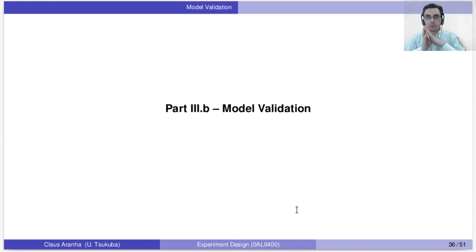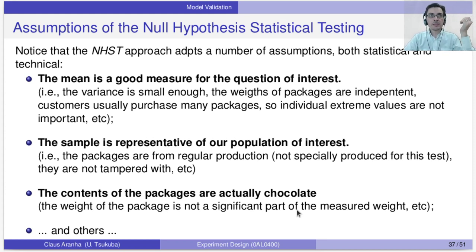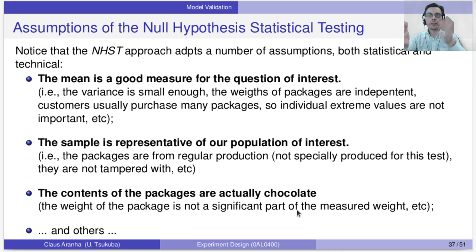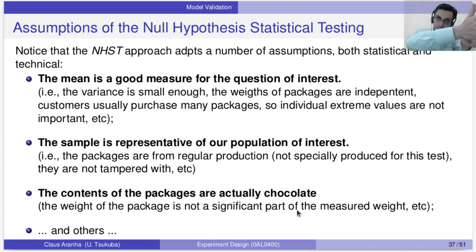Now let's talk about model validation — another important aspect of using tests responsibly. The null hypothesis statistical test adopts a number of assumptions, some statistical and some technical. Statistical assumptions include: the mean is a good measure for the question of interest (which assumes the variance is small enough), and the weights of packages are independent. If the weight of the second package depends on the first — for example, each successive one gets bigger — then the mean doesn't mean anything anymore.